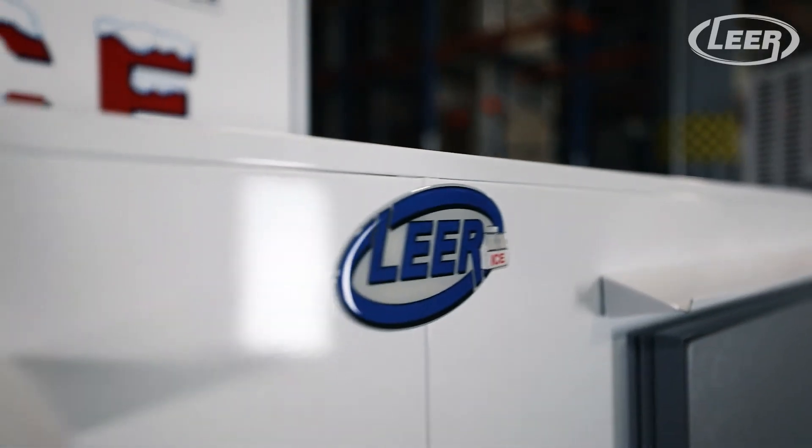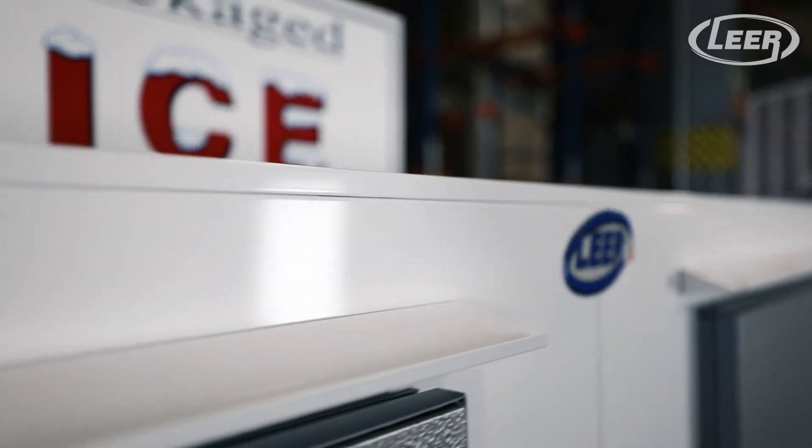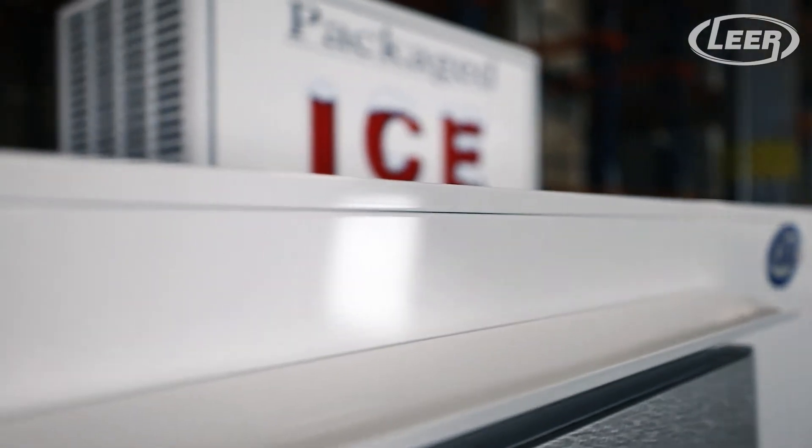The merchandiser's offset seams are precision formed, resulting in watertight lock-form seams that create a stronger and more durable merchandiser. This increases longevity and produces a professional, high-end looking product.